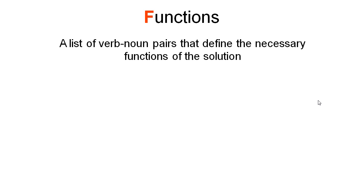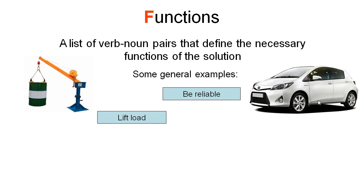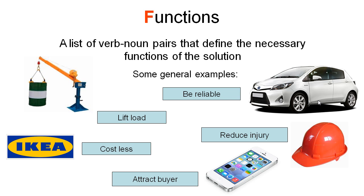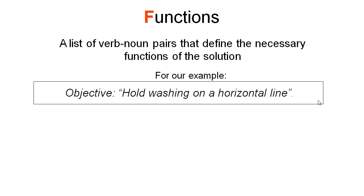The first F, functions, involves creating a list of verb-noun pairs that define the necessary functions of our solution, starting with brainstorming. Some very general examples might include: lift a load, be reliable, cost less, reduce injury, or attract buyer. Coming back to our example of 'hold washing on a horizontal line,' our list of verb-noun pairs should be straightforward. We've got: hold the washing, release it once dried, supply energy to make the holding process happen, get the holder, and potentially store the holder.